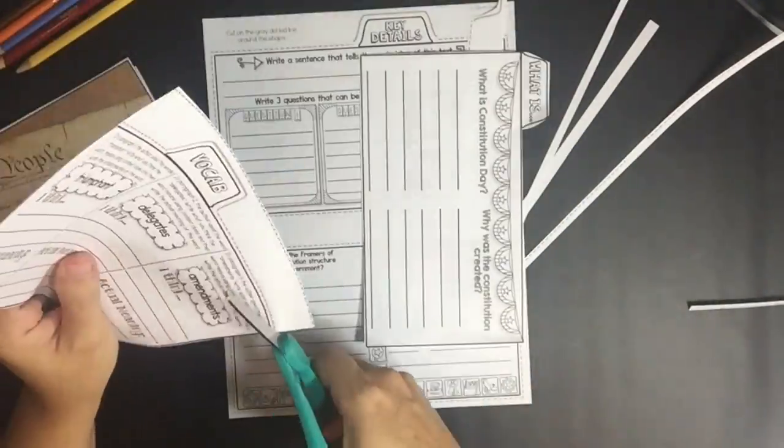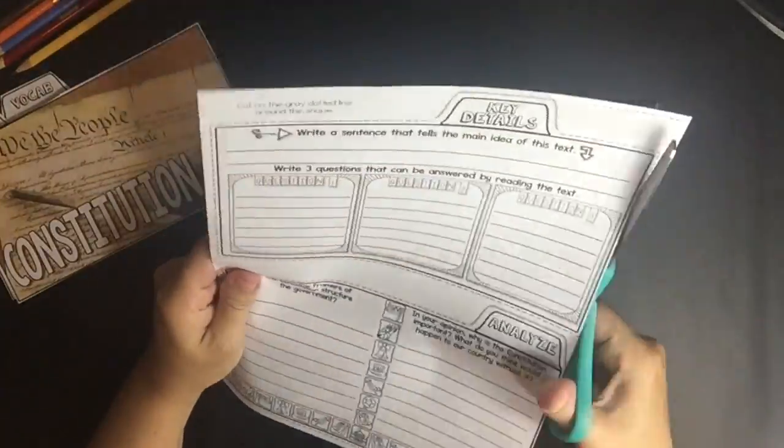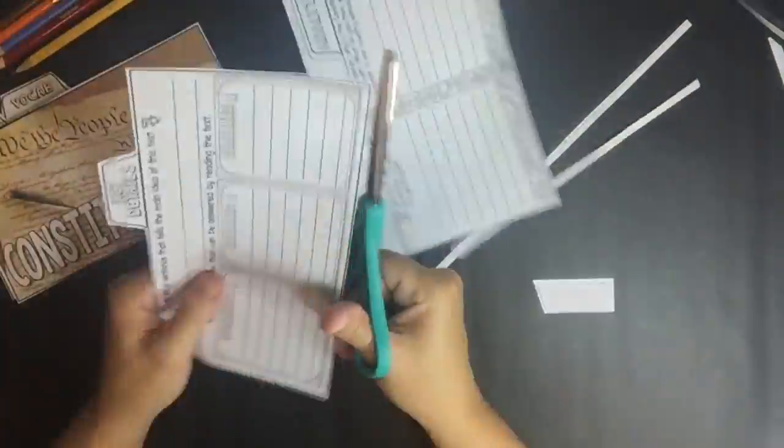And within the text, they will read the text and then they will answer different types of questions and work on vocabulary as well. So they will work on what is questions, so what is the Constitution and why was it created.